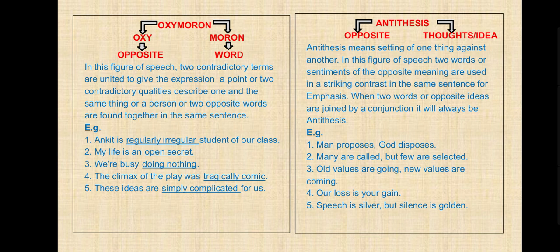Next, antithesis — 'anti' means opposite, 'thesis' means thought or idea. Antithesis means setting one thing against another. In this figure of speech, two words or sentiments of opposite meanings are used in a striking contrast in the same sentence for emphasis. When two opposite words or ideas are joined by a conjunction, it is antithesis. Examples: 'Man proposes, God disposes.' 'Many are called but few are selected.' 'Old values are going, new values are coming.' 'Our loss is your gain.' 'Speech is silver but silence is golden.'